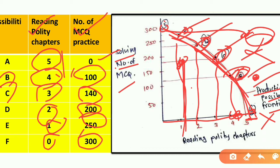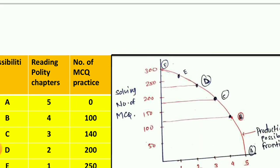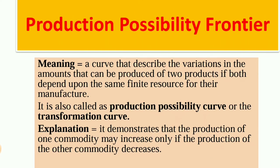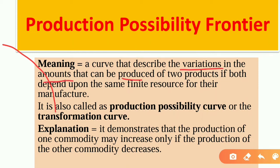This is very simple. If we have to produce more of one product, we have to give up time from the other product. Let's see the formal definition: a curve that describes the variation in amounts that can be produced of two products, both of which depend upon the same finite resources for their manufacturing. The resource — in our example, time — is constant.